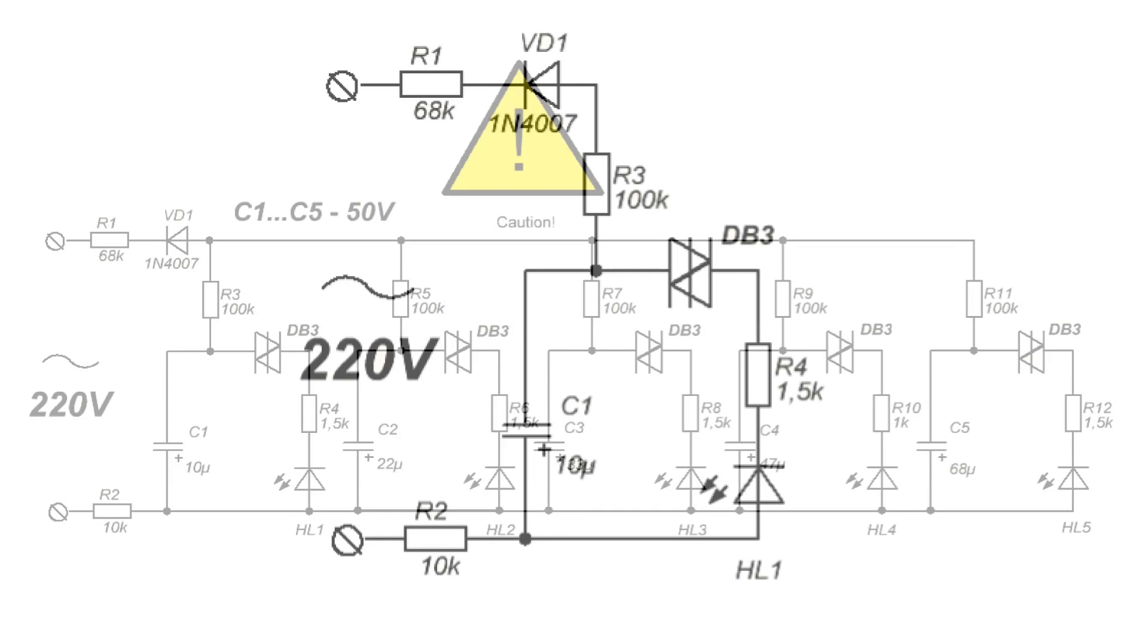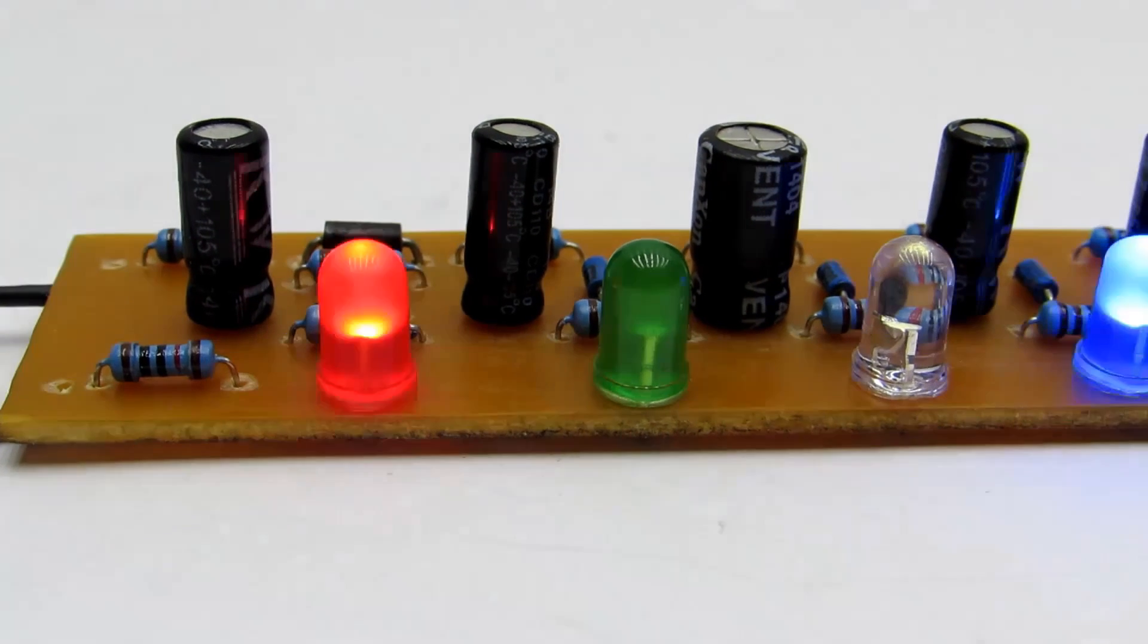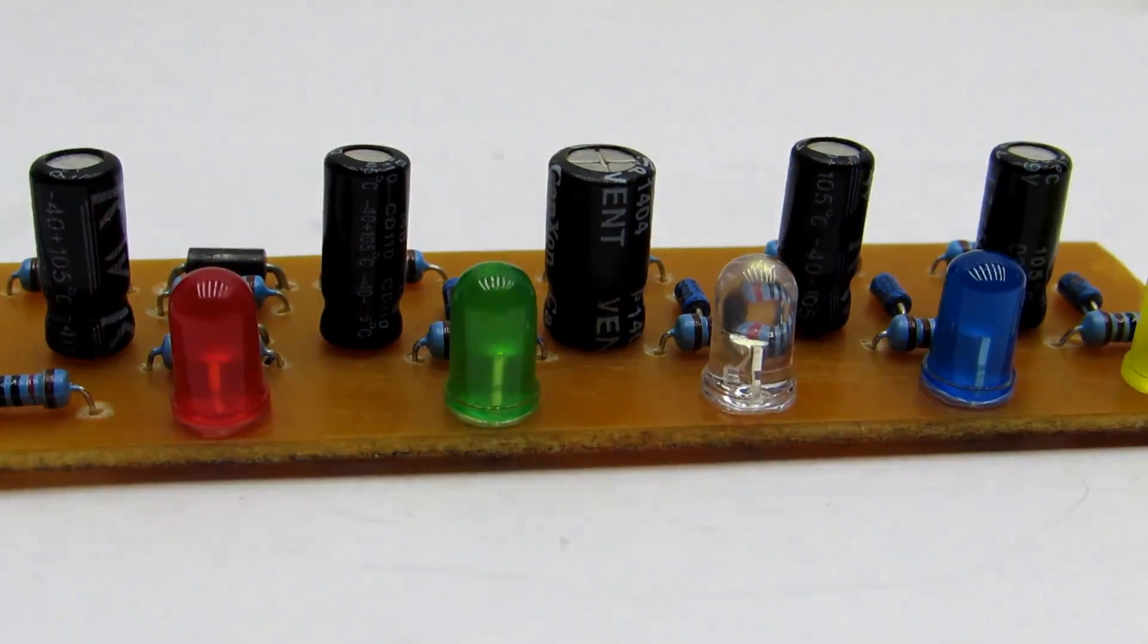Let's examine the principle of operation of the generator. Through a limiting resistor R3 is charged electrolytic capacitor C1. Once it is charged to the breakdown voltage of denister, which is about 32 volts, the denister opens. For denister and current limiting resistor R4, capacitor is discharged to the LED. It will flash for a short time. The voltage on the capacitor will decrease, denister will close, and LED goes out.